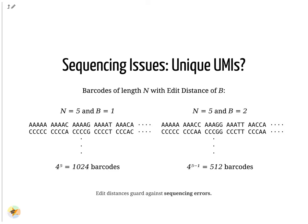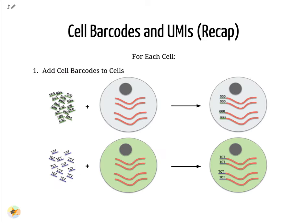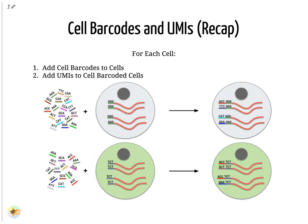In the context of amplification, UMIs do not need to be unique — they just need to be random enough to deduplicate transcripts in order to give a more accurate estimate of the number of transcripts within a cell. To recap: first, each cell has cell barcodes added to each RNA molecule. Then we add random UMIs to all transcripts, which further tag the molecules. These can then be used to deduplicate the transcripts after amplification.